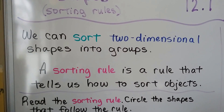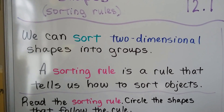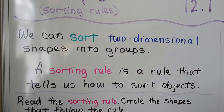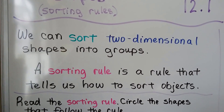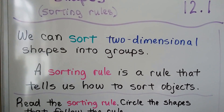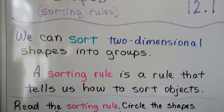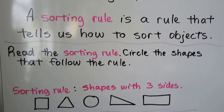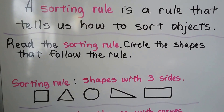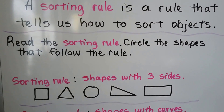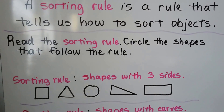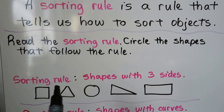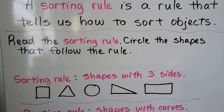We can sort two-dimensional shapes into groups. A sorting rule is a rule that tells us how to sort objects — it tells us which group it belongs in. Read the sorting rule and circle the shapes that follow the rule. The sorting rule is: shapes with three sides.